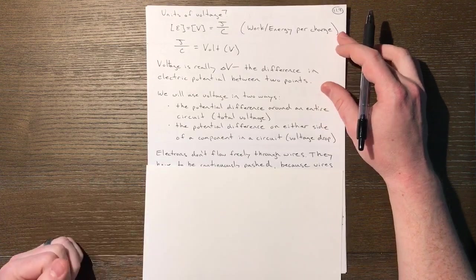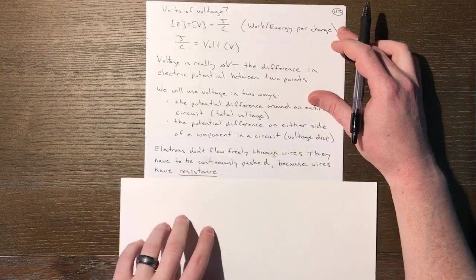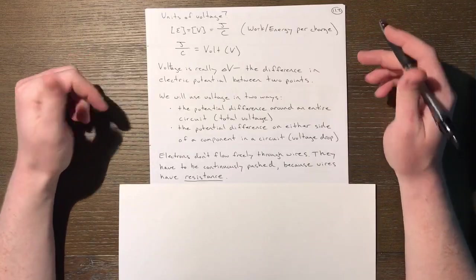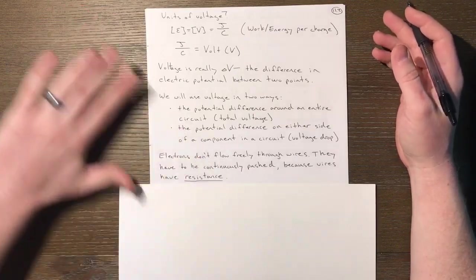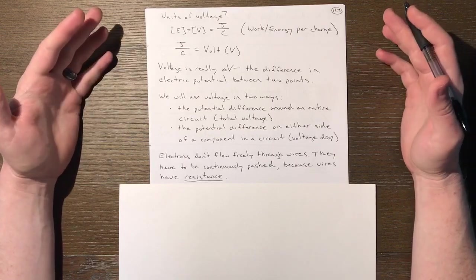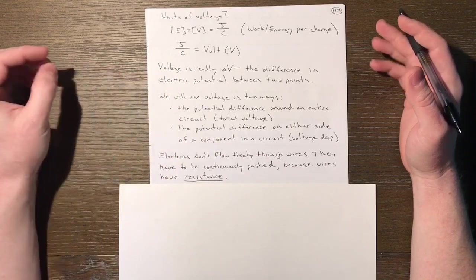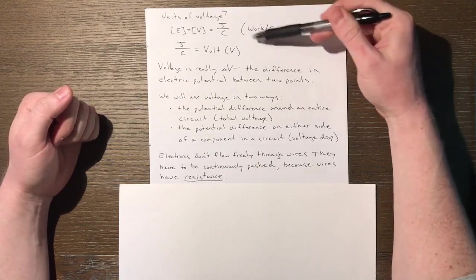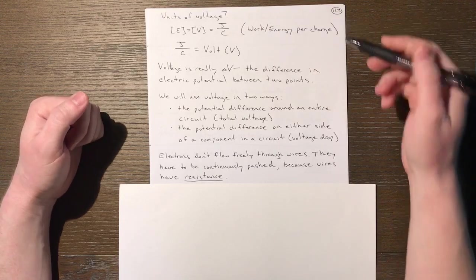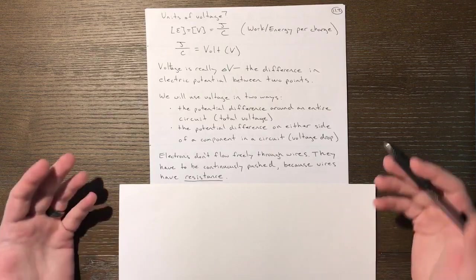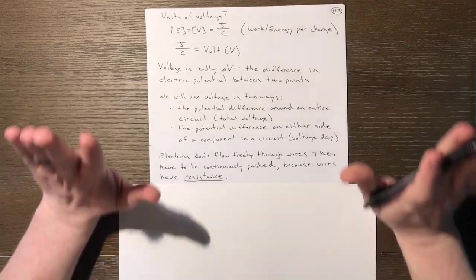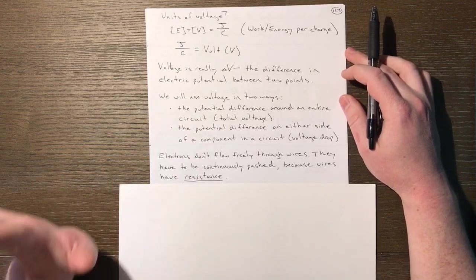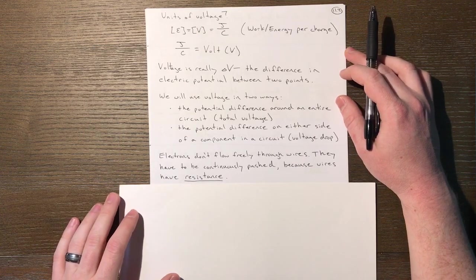Now let's get to resistance. Electrons don't flow freely through wires. If you send an electron down a wire it only goes a certain distance, like a block sliding across a table. The block and table have friction. Similarly there's something similar to friction in wires: resistance. Electrons have to be continuously pushed because wires have resistance. There's always resistance; you have to keep pushing to keep current flowing.